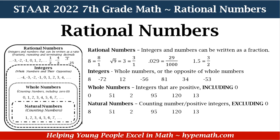Repeating and terminating decimals are also considered rational numbers. Now let's look at integers. These are whole numbers or the opposites of those whole numbers. In our example we have 8, negative 7, 72, 12, negative 56, 81, 34, and negative 53 — all whole numbers that can be positive or negative.